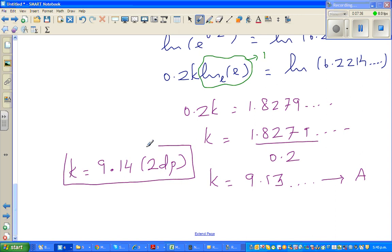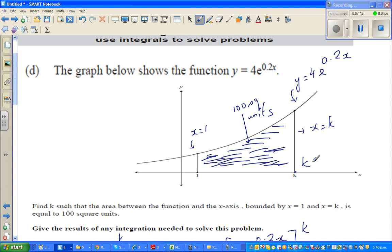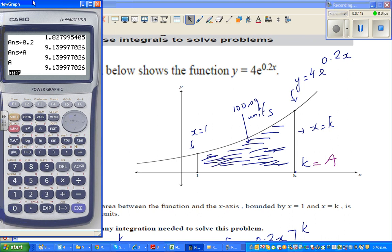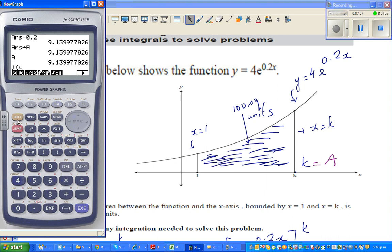Now to check this on the calculator, so k is now on my calculator as A. So I'll show you how to check this. You go option, calculus, integration, and you type in 4, shift E, to the power 0.2x, comma, 1, comma, I put alpha A, close the bracket. Exactly 100.